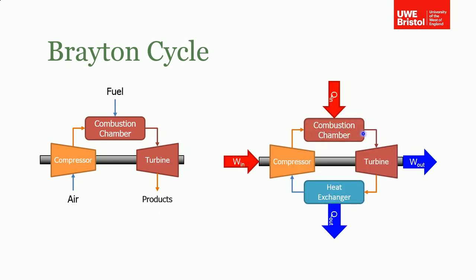So we need to close this cycle. The way we do that is by assuming a constant-pressure heat exchanger that rejects the leftover heat from the turbine, bringing the air in the cycle back to its original state so it can go to the compressor again to extract work and so on.